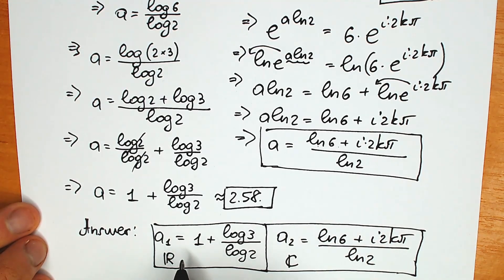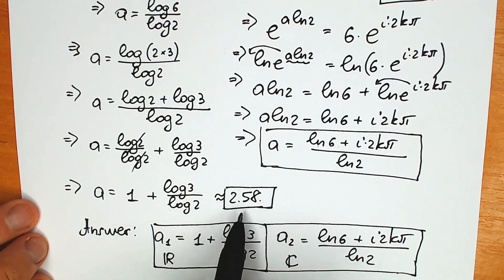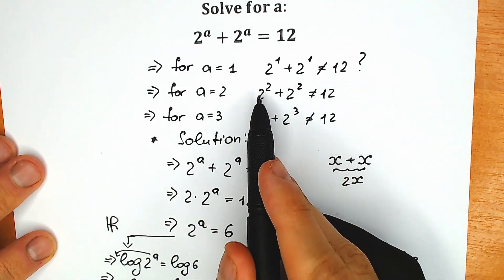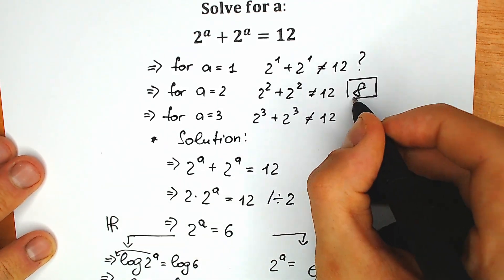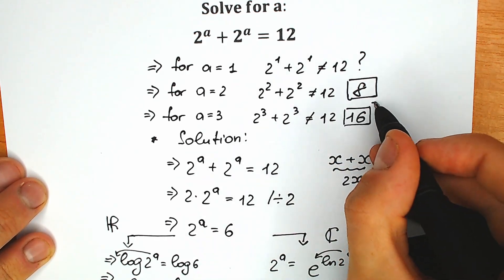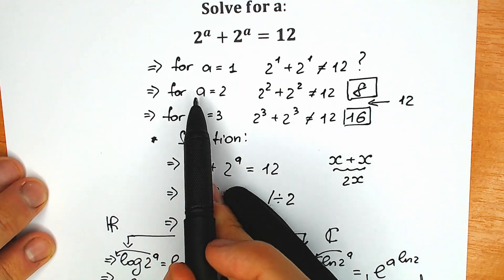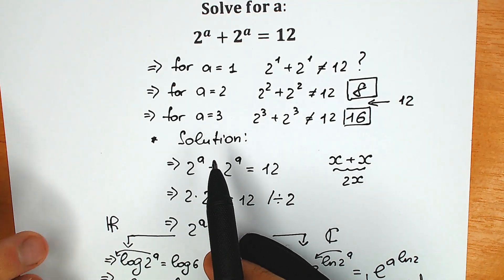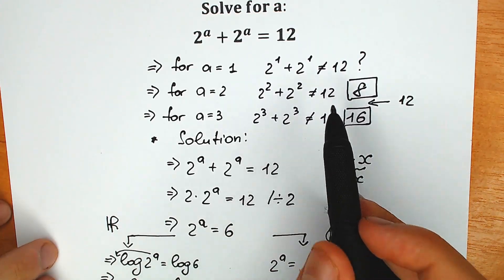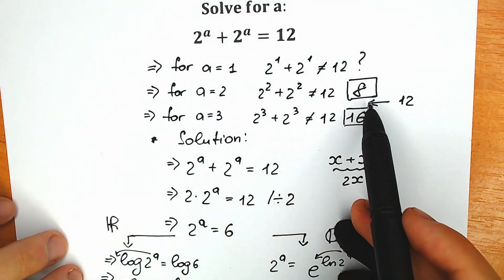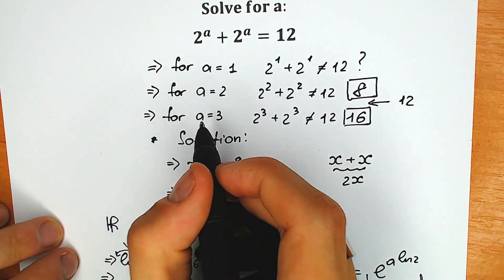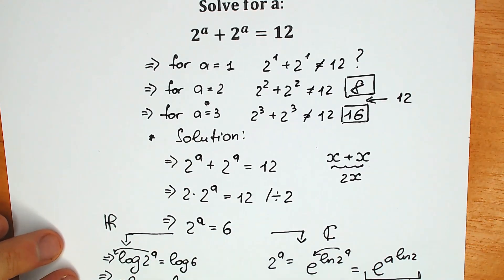We have the real number root and you can check it. If you need a quick proof, we have 2.58. Looking back at our inspection steps: when a equals 2 we had 4 plus 4 equals 8, and when a equals 3 we had 8 plus 8 equals 16. But in our question we have 12. So our 12 is between 8 and 16, meaning our root is between 2 and 3. This is a quick life hack — if you try inspection step by step, you can understand where your root lies.